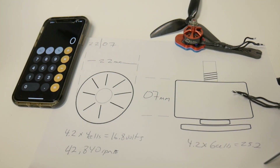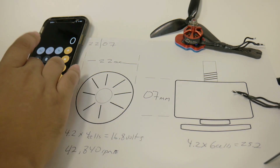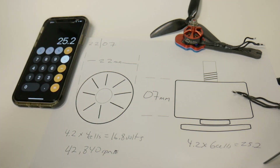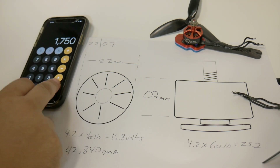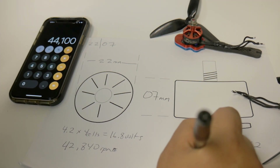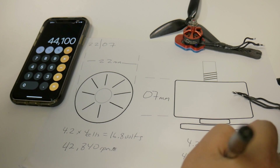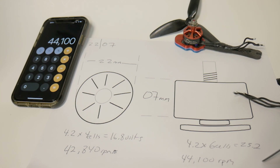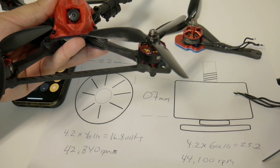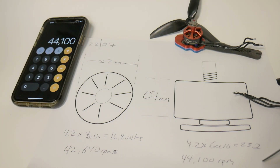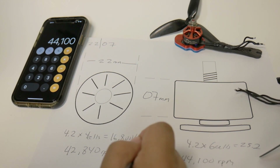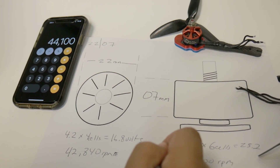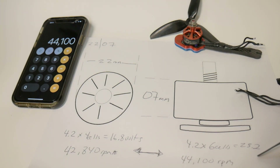Now the same calculation for the 6S motor: 25.2 volts × 1750 KV = 44,100 RPM. So even though one runs on 4S and the other on 6S, the RPMs are actually very close. The benefit of 6S is that the load is distributed over more cells, so amperage spikes are lower, which can result in potentially longer flight times depending on how hard you're pushing the throttle.